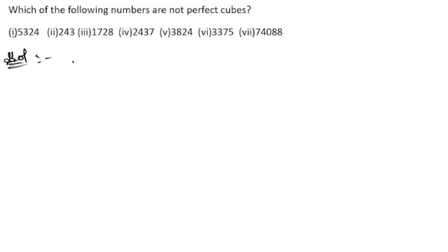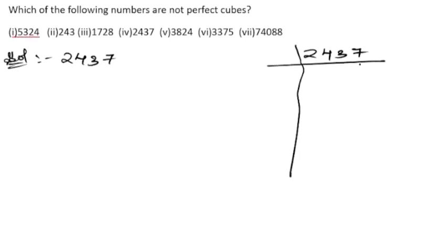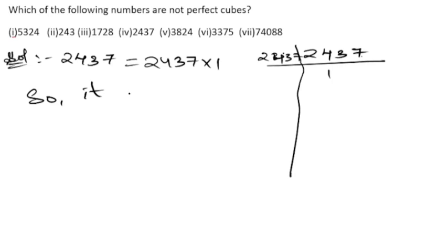Now let us take the fourth number: 2437. Since the last digit is 7, we do not divide by 2. In fact, 2437 is a prime number, so it appears only once and is not grouped three times. Therefore, 2437 is not a perfect cube.